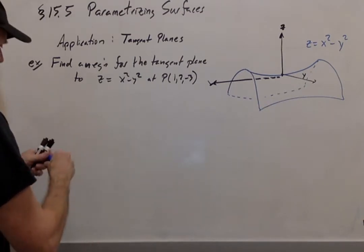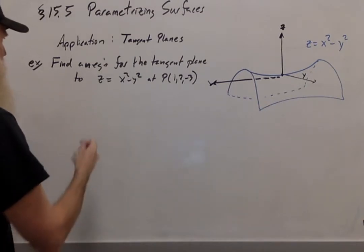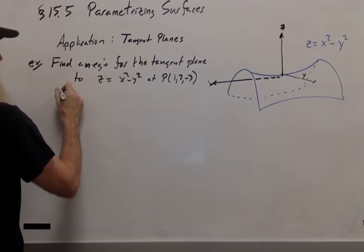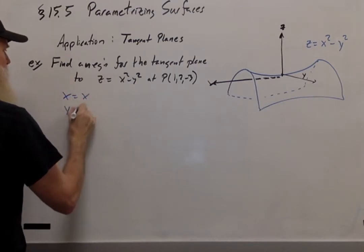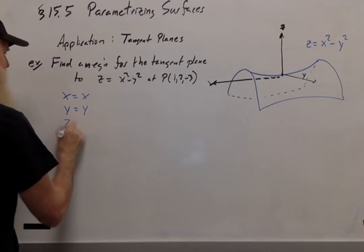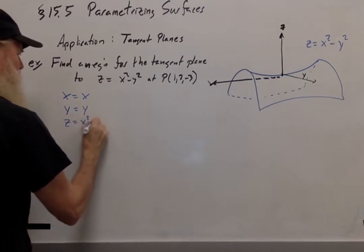z is written as a function of x and y, so a great way to parametrize it would be to set x equal to x, y equal to y, and z equal to x squared minus y squared.